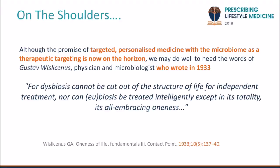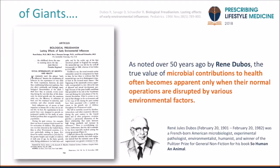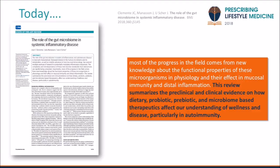Back in 1933, Walensis said that dysbiosis — a change in the normal relationship between bacterial species in the gut and the host — cannot be cut out of a structure of life for independent treatment, nor can eubiosis, which is a stable healthy bacterial mix in the gut, be treated intelligently except in its totality. René Dubois, 50 years ago, said that microbial contributions to health often only become apparent when they're disrupted. And just 10 days ago in the BMJ, the role of the gut microbiome in systemic inflammatory disease was published. This is not a new subject, but it's a new way of understanding it in order to translate this into something that gives credibility to your thought process.